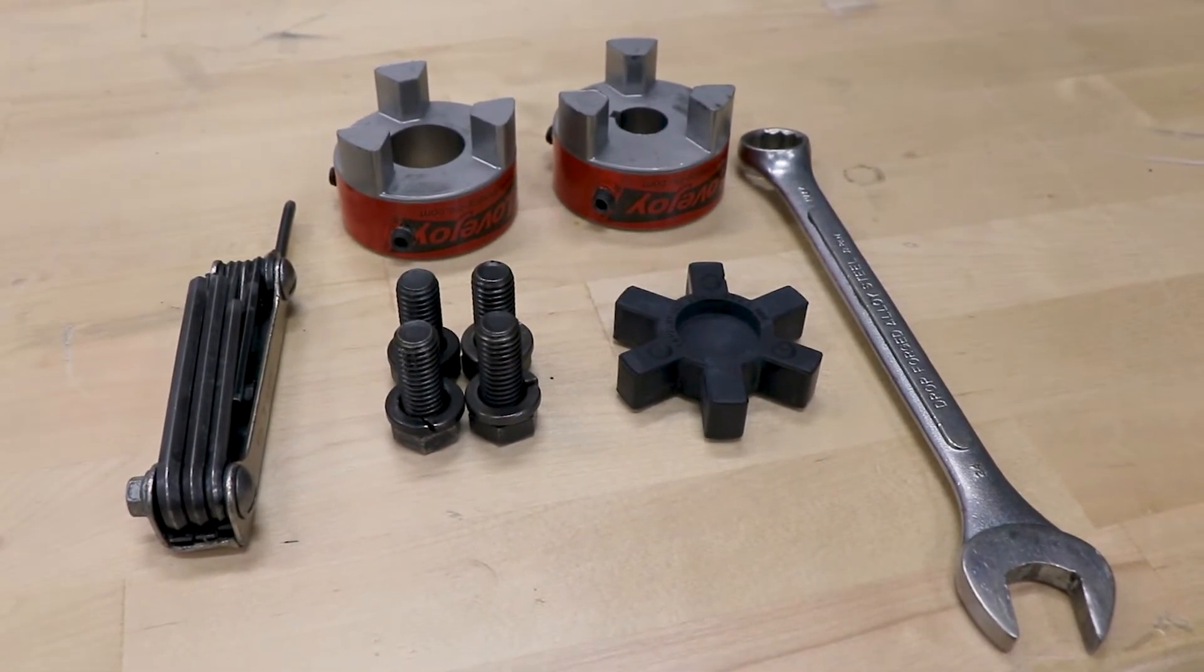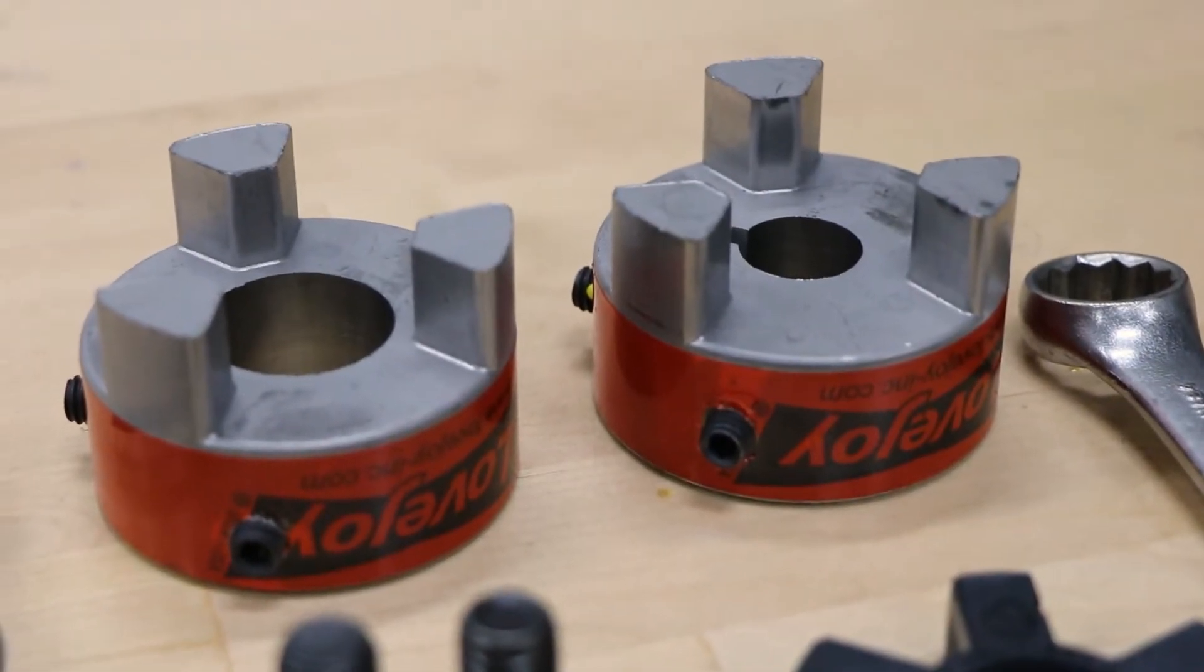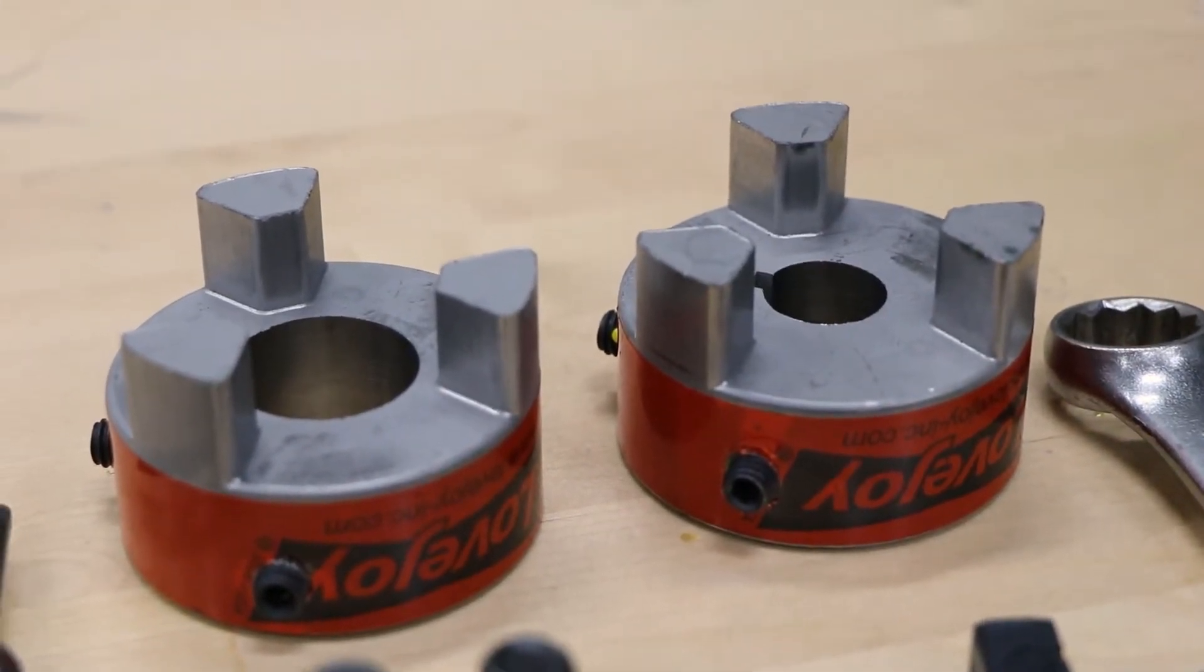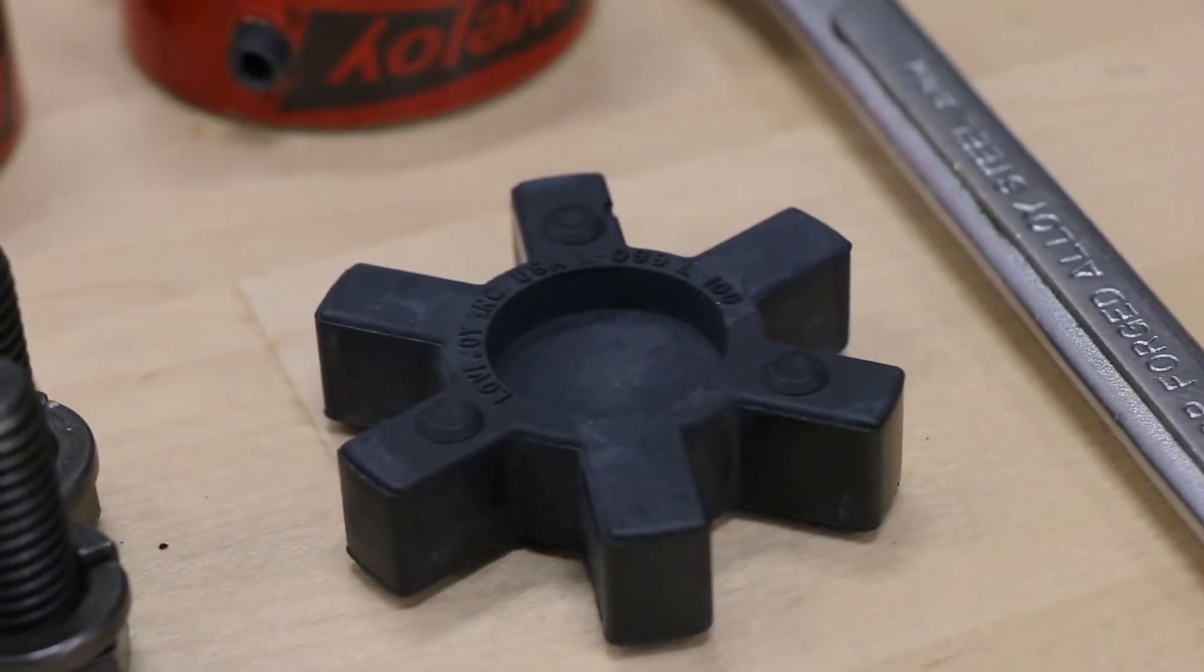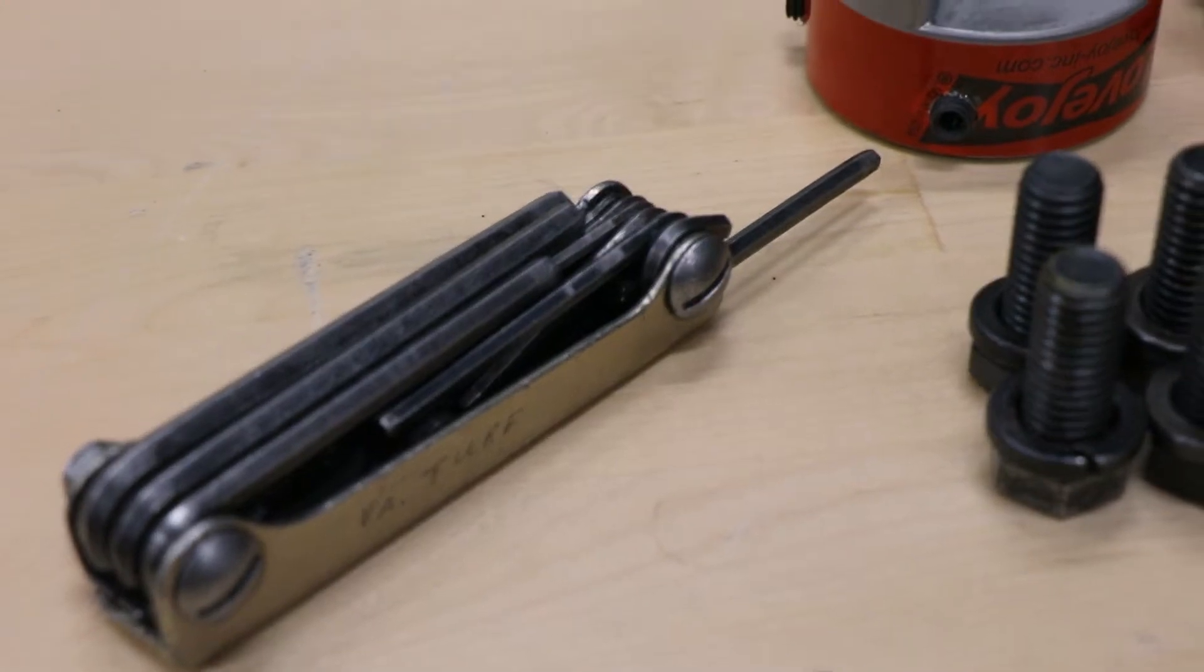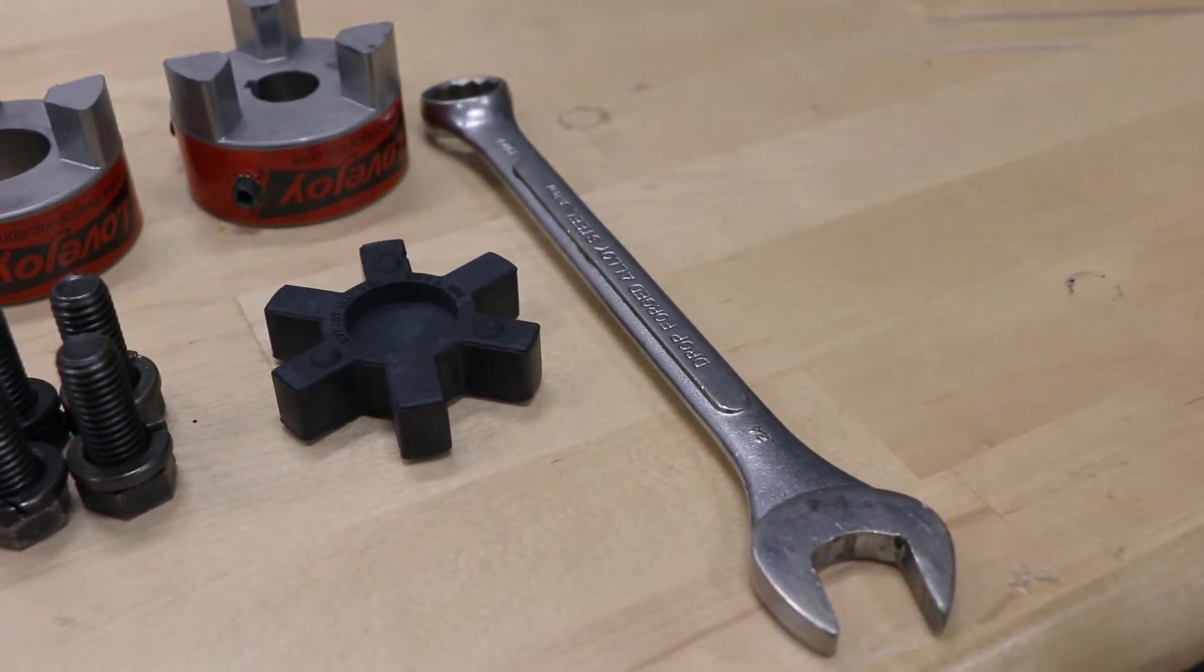For the first step, we want to make sure we have all the components for the install. Here we have the coupling halves—one side for the motor, one side for the reducer. We also have the bolts for the motor connection, as well as the coupling spider. Make sure you have all that with your own wrench to set the coupling spacing and the appropriate wrench.